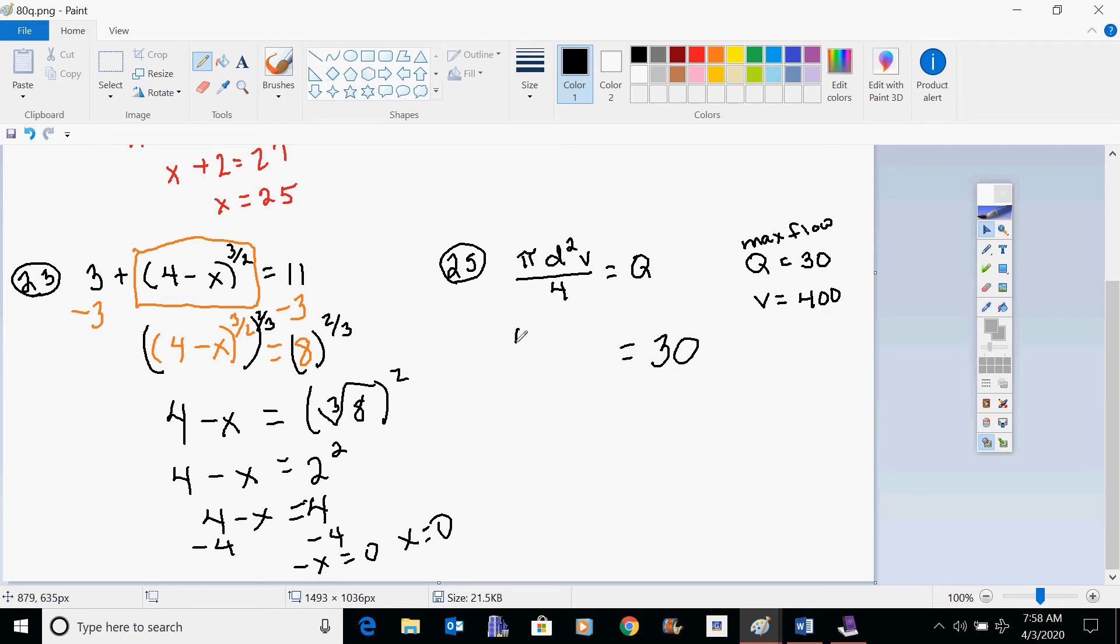It said the max flow was Q, and then later it said that Q was 30, so you'd plug in 30 here. Pi is always pi, 3.14. D is what you were asked to find. V is 400, divided by 4. Now let's talk about some of the algebra to solve it because I don't know what your question was, how to plug in or how to solve.